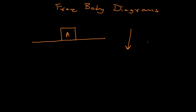Since the block is resting and not moving, let's start plotting the forces. The first force is the gravitational force acting on the body in the downward direction. We draw an arrow denoting the direction of that force, and beside it we denote which force it is — the gravitational force Fg, which can also be written as mg.